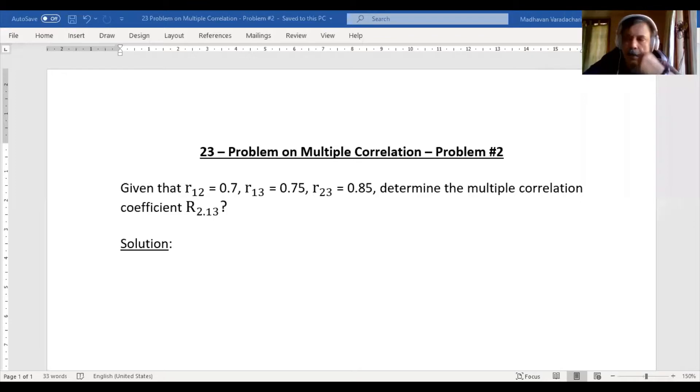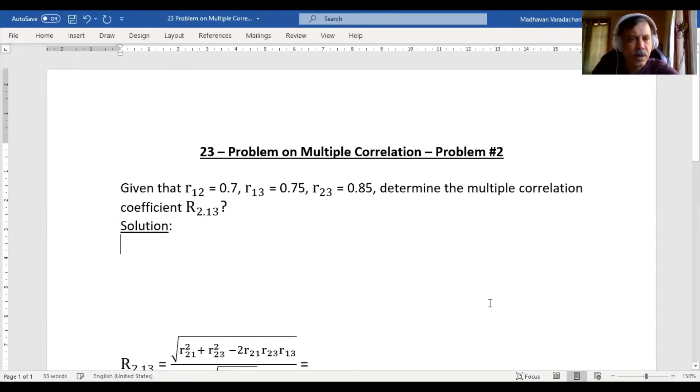Hello everyone, this is the second problem in multiple correlation. The question goes: given r12 equals 0.7, r13 is 0.75, r23 is 0.85, we have to determine the multiple correlation coefficient R2.13. So the formula for 2.13 will...